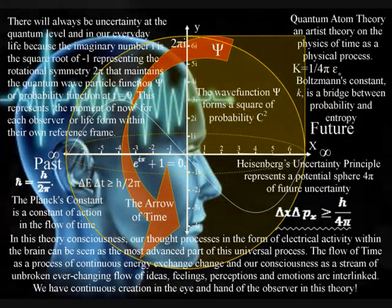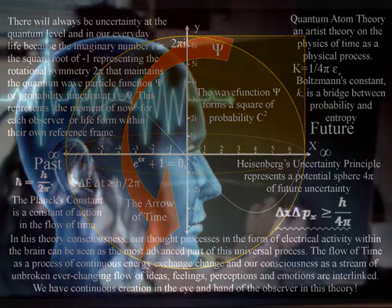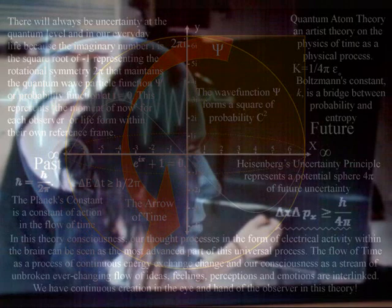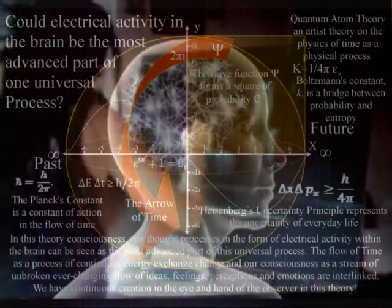But consciousness is not part of this process. Conscious awareness always remains in the moment of now in the center of its own reference frame. This theory explains this by explaining conscious awareness in its most simple form as electrical activity in the brain that is aware of its own electrical potential.